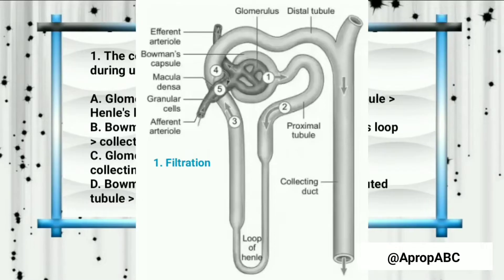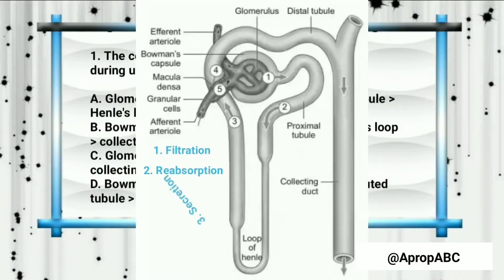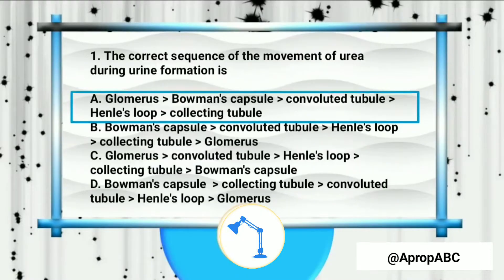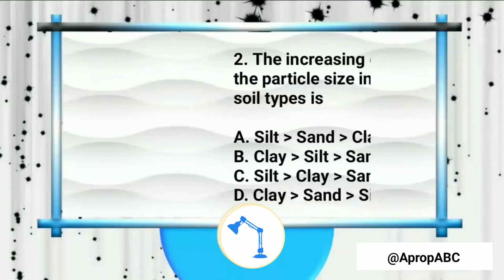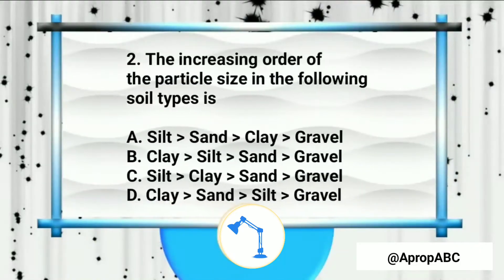This process involves three steps: number one is filtration, two is absorption, and three is secretion. Note that urine contains 95 percent water — a very large percentage — and then about five percent waste products.